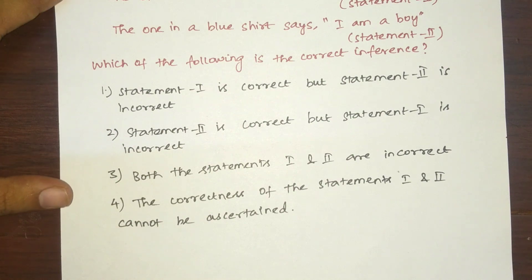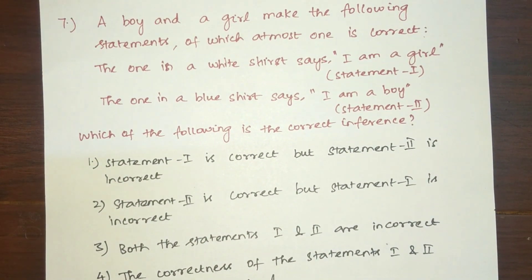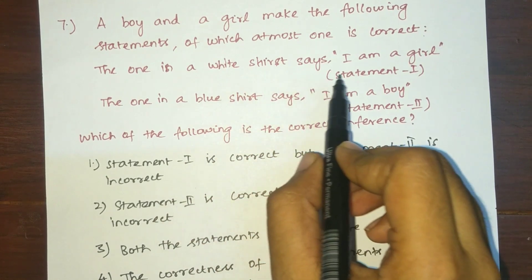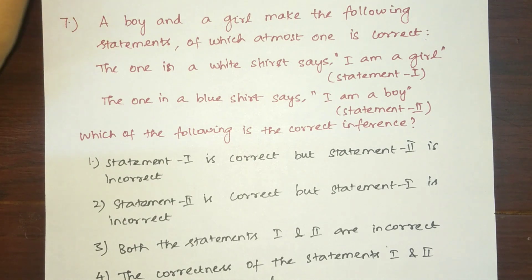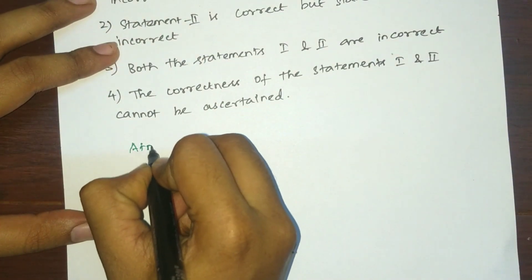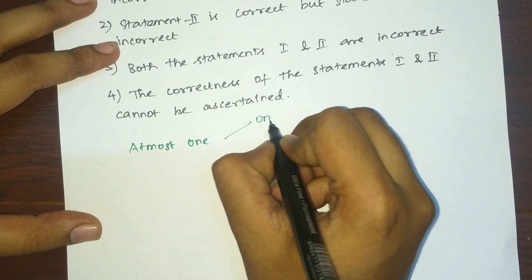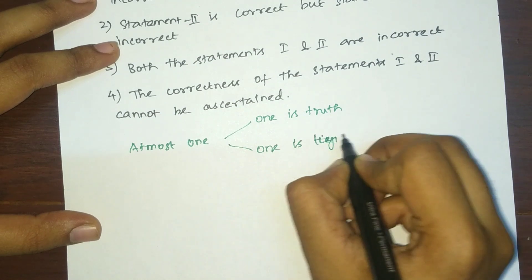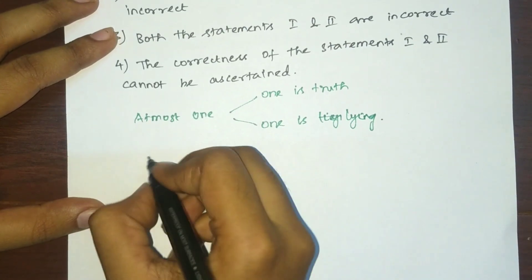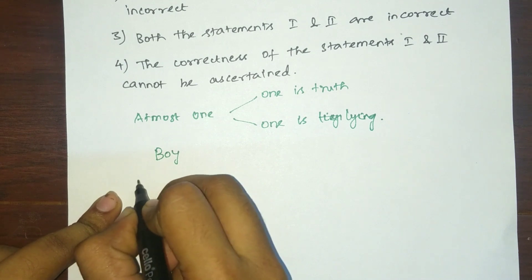Next question: a boy and a girl make the following statements, of which at most one is correct. The one in a white shirt says 'I am a girl'; the one in a blue shirt says 'I am a boy.' Which is the correct inference? 'At most one is correct' means either one is right or none of them is right. Let us solve this by cases.